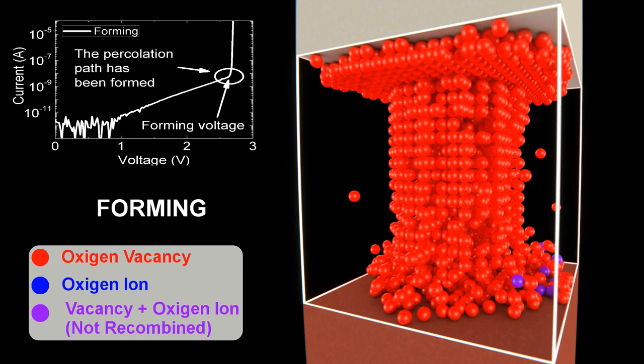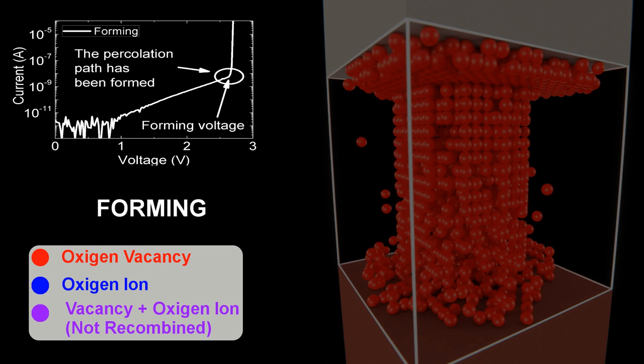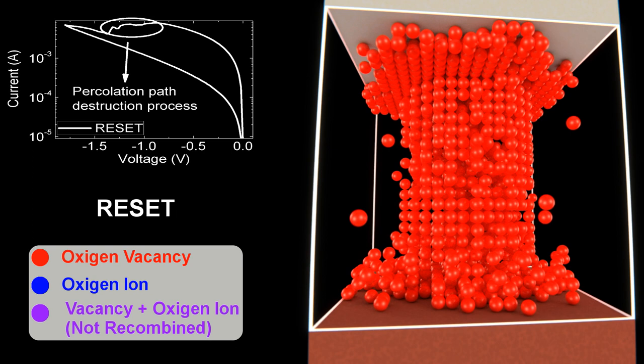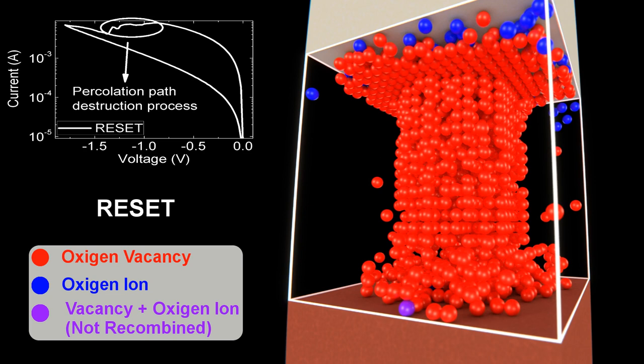For the reset process, the electric field is reversed and the oxygen ions drift back towards the bottom electrode. In this case, oxygen vacancies and ions recombine and the percolation path is ruptured.